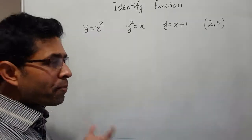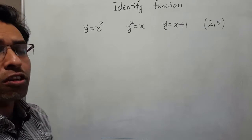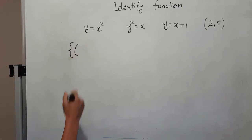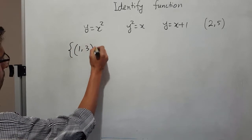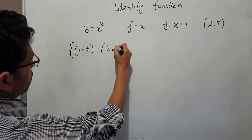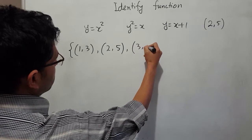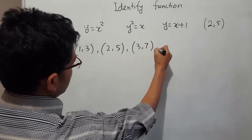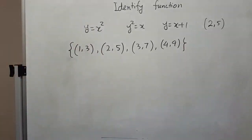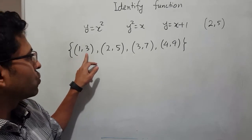The first method is the mapping diagram. If we have a set of ordered pairs like (1, 3), (2, 5), (3, 7), and (4, 9), where the first value is the x-coordinate and the second value is the y-coordinate, we can show this in a mapping diagram.